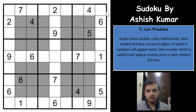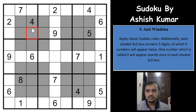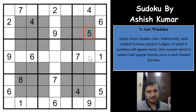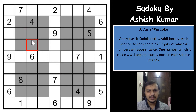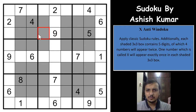Coming onto the Sudoku — according to the rules, we have to place digits 1 to 9 in each row, each column, and each 3x3 box without repetition. There are some window-like shapes in the Sudoku — 4 window-shaped regions called Windokus. In these shapes, there will be exactly 4 digits appearing twice and 1 digit appearing once. There are 9 cells forming a window shape, and those 9 cells must have 4 digits appearing twice and 1 digit appearing once.